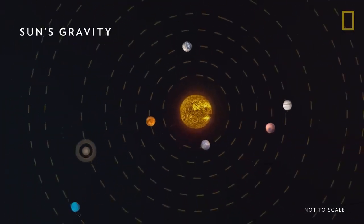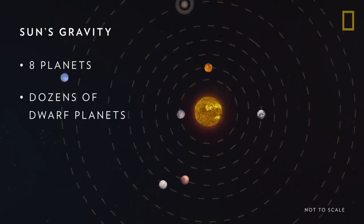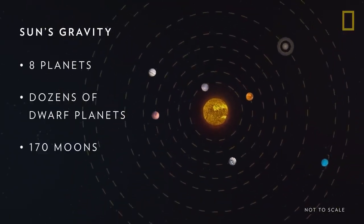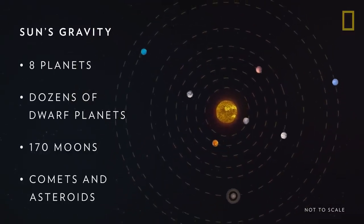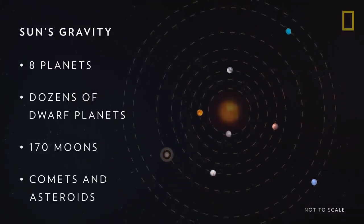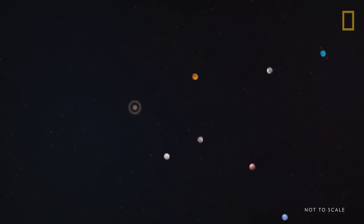This gravitational pull allows the sun to hold together a system of eight planets, potentially dozens of dwarf planets, at least 170 moons, and countless comets and asteroids. Without the sun's gravity, these celestial bodies would drift off into deep space.